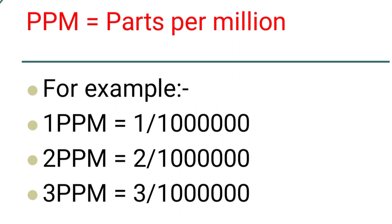For example, 1 ppm is equal to 1 upon 1 million. 2 ppm is equal to 2 upon 1 million. In the same way, 3 ppm is equal to 3 upon 1 million.